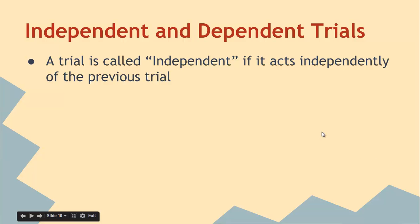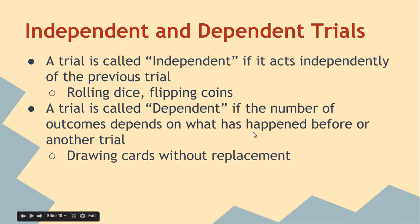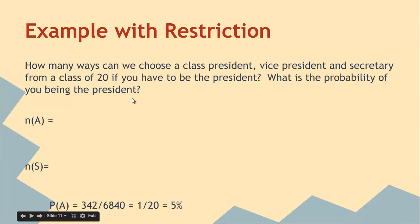Independent trials: we learned about mutually exclusive, non-mutually exclusive last day, and so here we talk about independent trials. So a trial is independent if it acts independently of the previous trial. Examples are rolling dice, flipping coins. The previous trial doesn't impact the future trial. A trial is called dependent if the number of outcomes depends on what has happened before or on another trial. Drawing cards without replacing, chance of rain and success in a football game or a field hockey game, those kind of things. Like you might be better in the rain or worse in the rain, but if it does come up rain that will impact the chance that you're going to win. Tree diagrams are very helpful for dependent trials. Slot method works as well, but you just want to see what's happening.